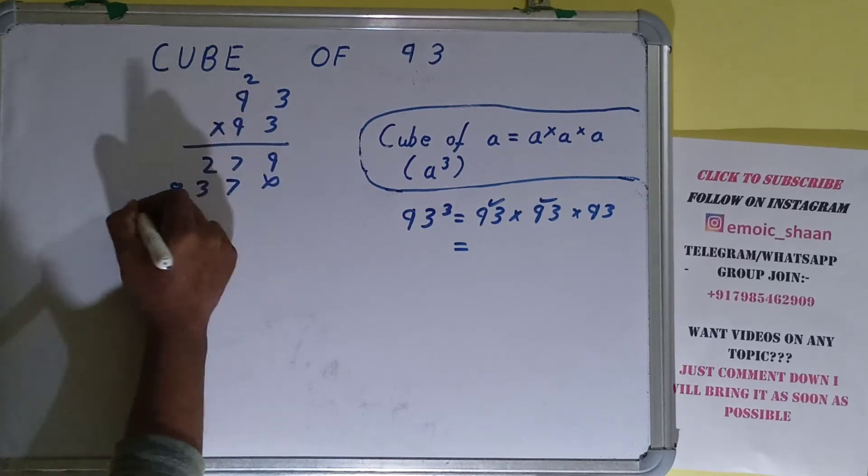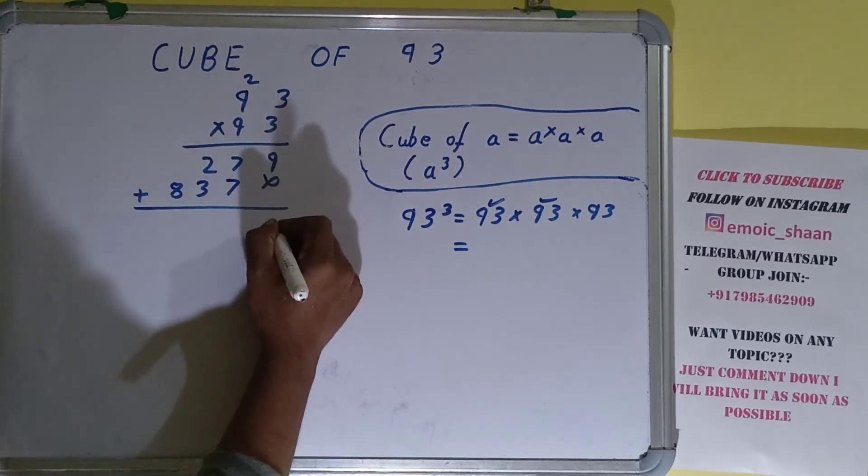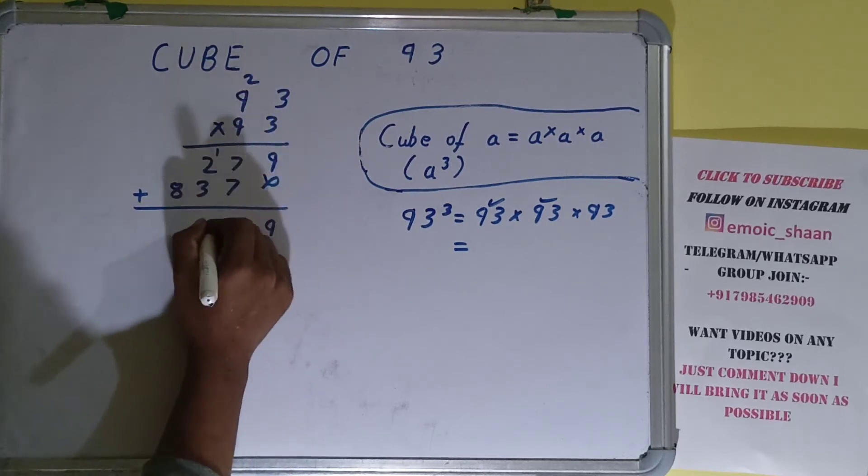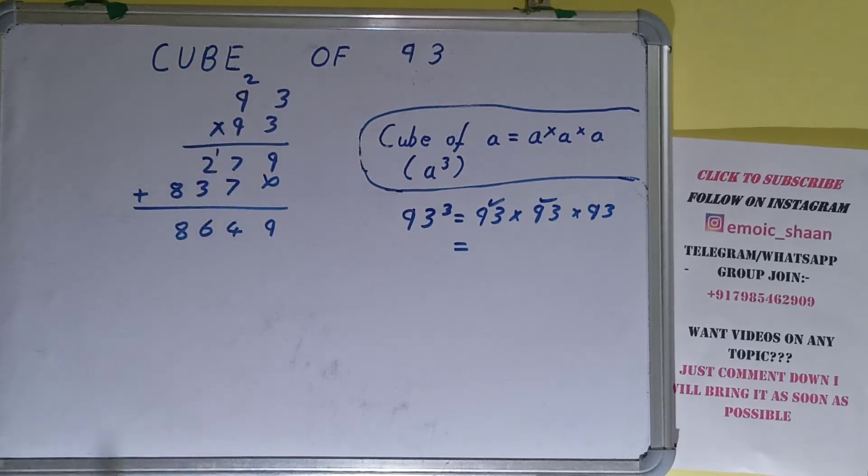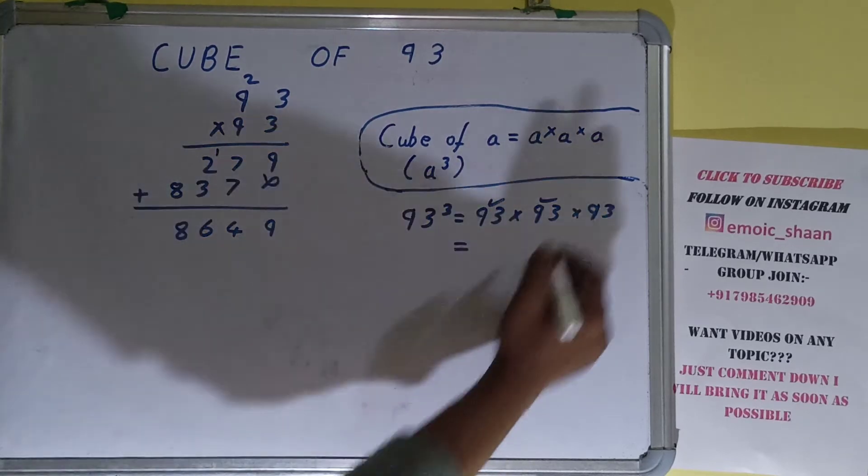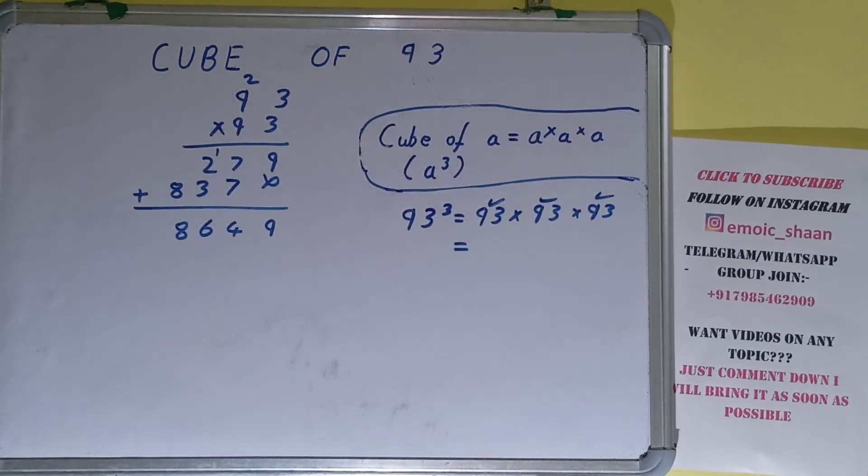Just add it, this will be 83, this will be 9, this will be 4, this will be 6, and this will be 8. Now with this answer we'll be multiplying the third term.